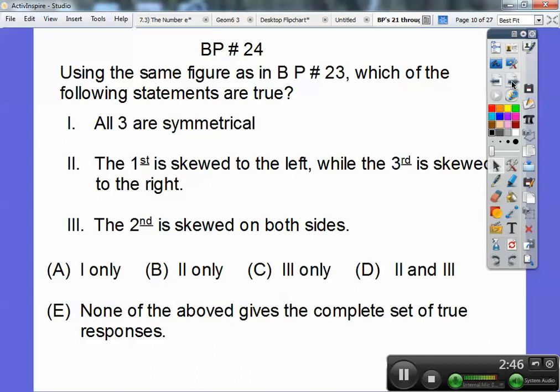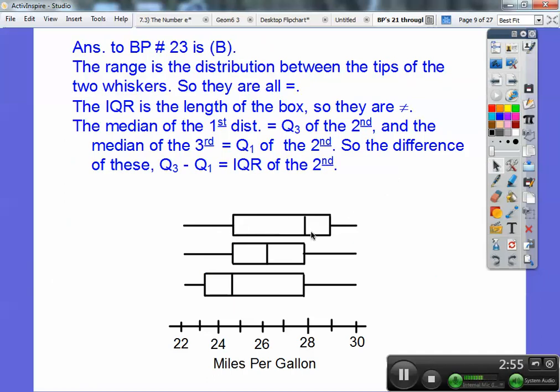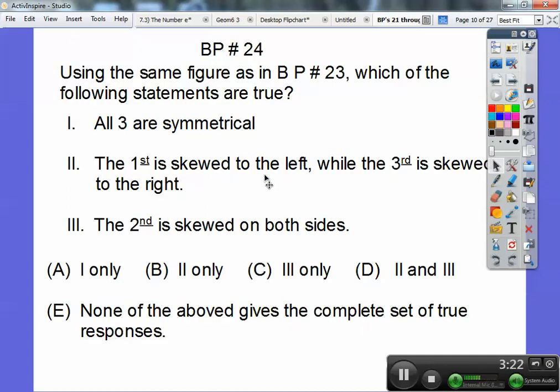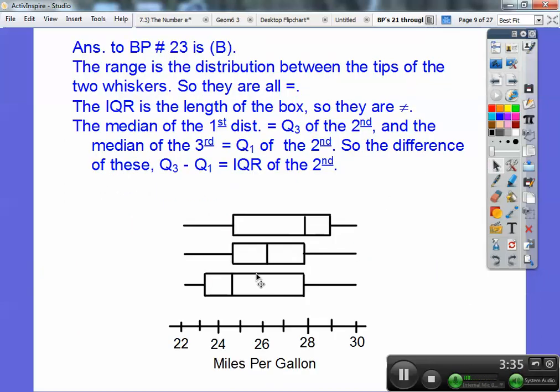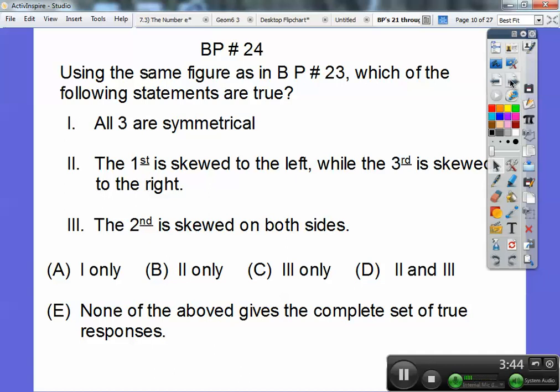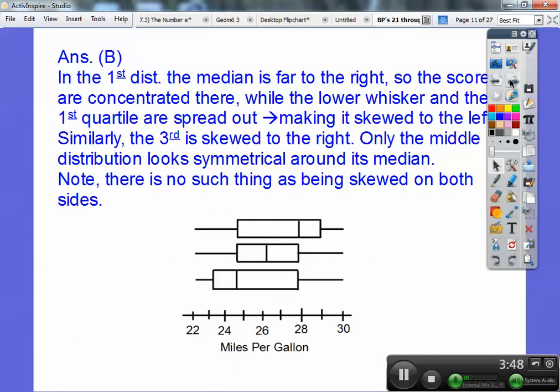Using the same figure, which of the following statements are true? All three are symmetrical. This is not symmetrical because the median is right here. If this is my middle number, that tells me most of the numbers are over here and very few numbers are over here. This one is skewed to the left. Similarly, this one is skewed to the right. The first is skewed to the left while the third is skewed to the right. That one looks true. The second looks pretty symmetrical. The median is pretty much in the middle between the third quartile and the first quartile. So choice B on that.